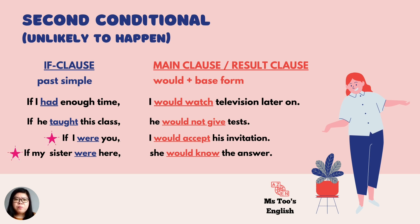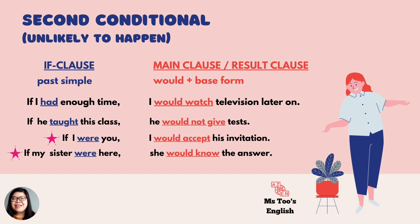For the fourth sentence: if my sister were here, she would know the answer. The situation could be that you and I are thinking about the answer to a certain question and we don't know how to answer. Then I come out with: if my sister were here, she would know the answer. But in actual fact, you and I are talking here and my sister is not here. There's no way she can help us with the question. So this is why I use second conditional.